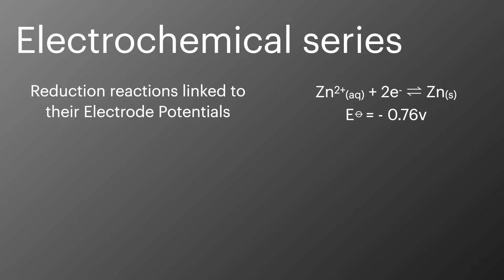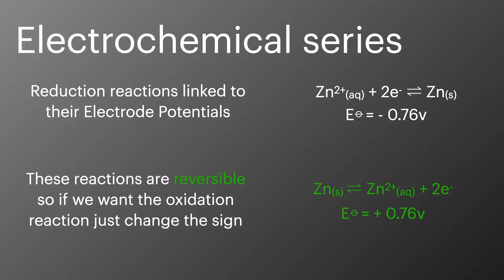So these reactions are all reversible. So if we want the value for an oxidation reaction, all we need to do is reverse the sign on the voltage. So for zinc, it goes from being minus 0.76 for the reduction reaction to plus 0.76 for the oxidation reaction.